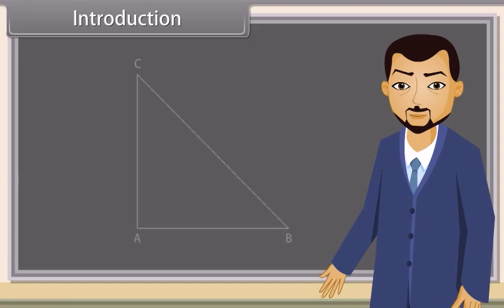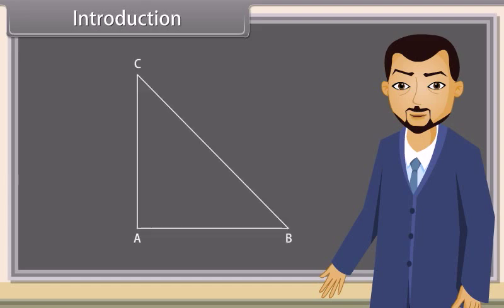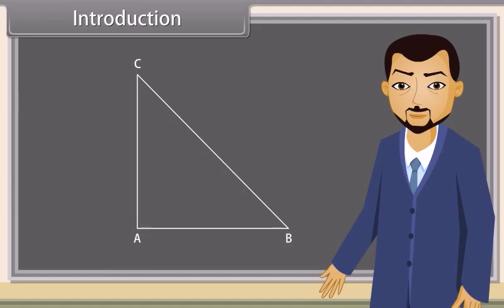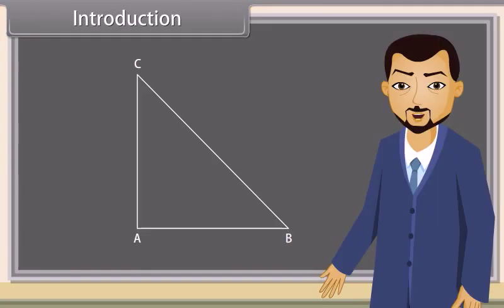Absolutely correct. Look at this triangle. Which triangle is this? It is a right triangle. Now if one side of this triangle is 10 cm and the second side is 15 cm, then can you tell the length of the third side? Yes, we can find the length of the third side using the Pythagoras theorem.